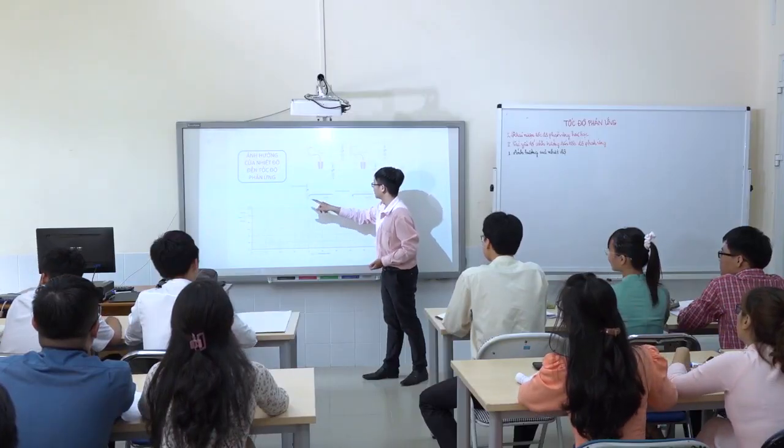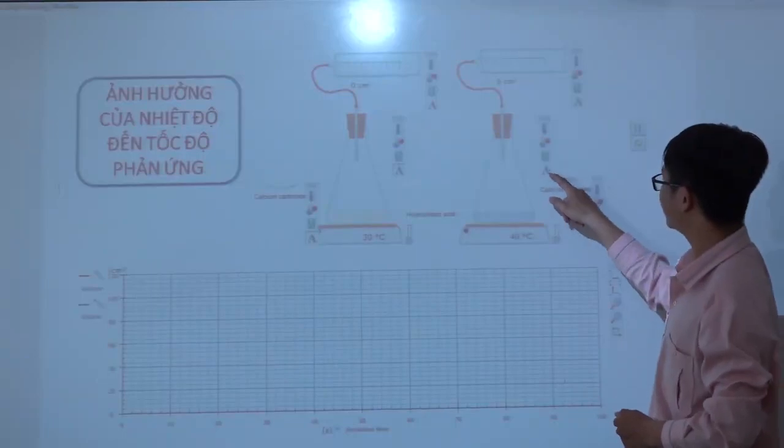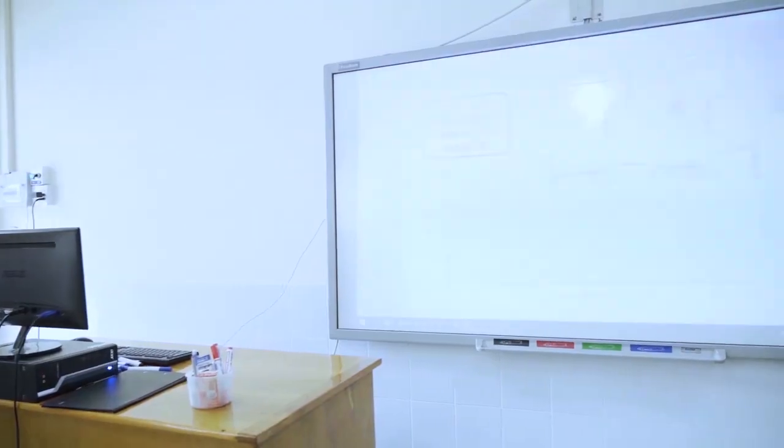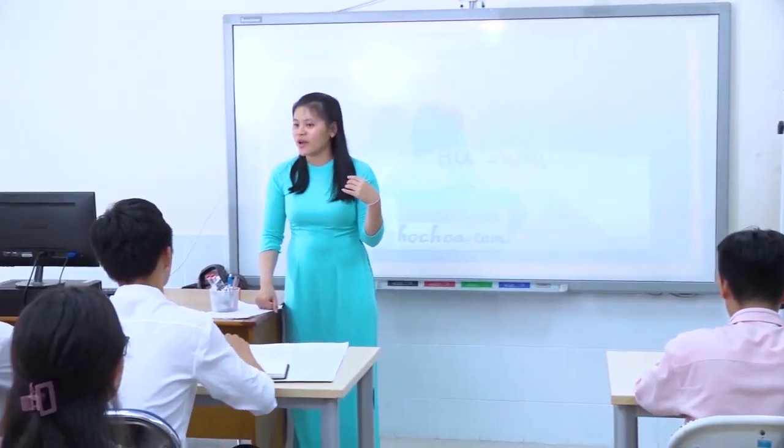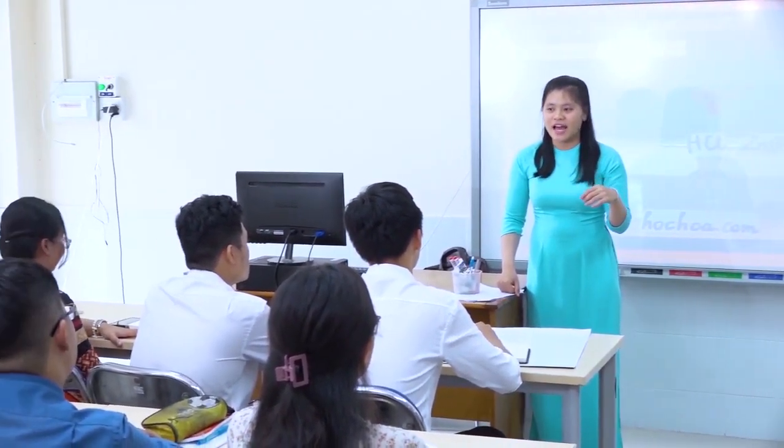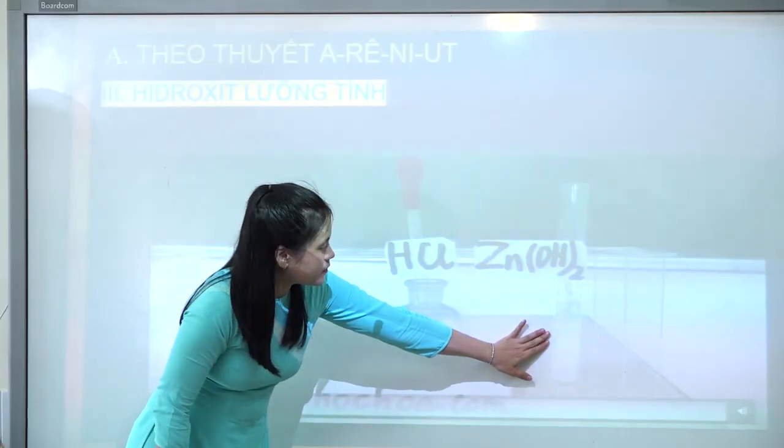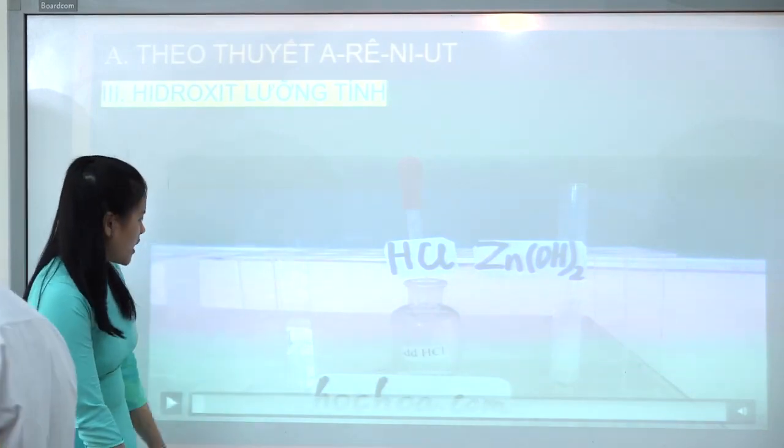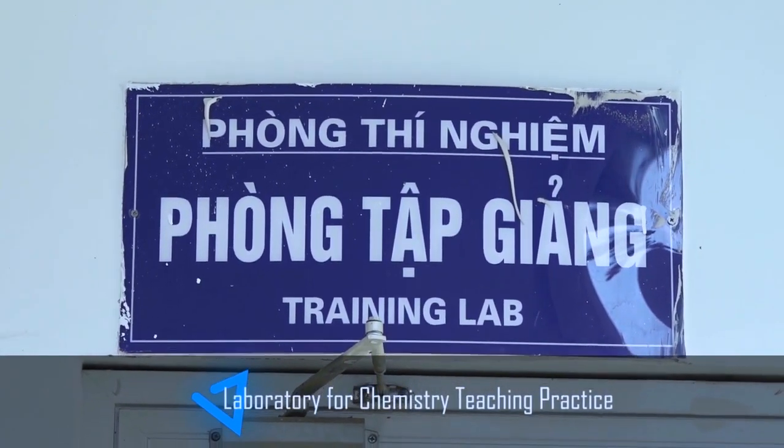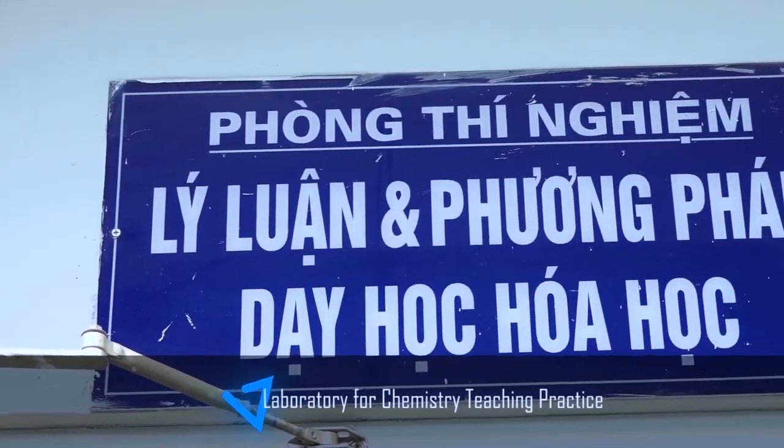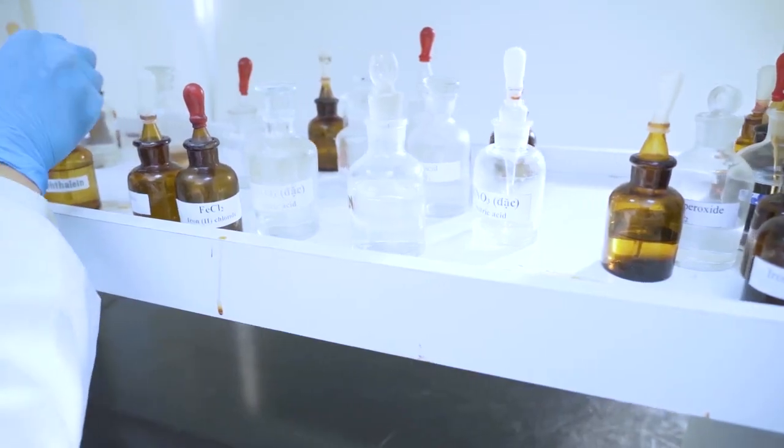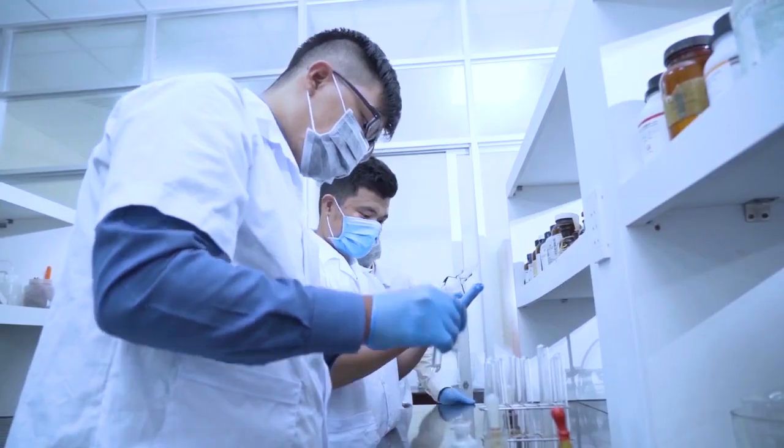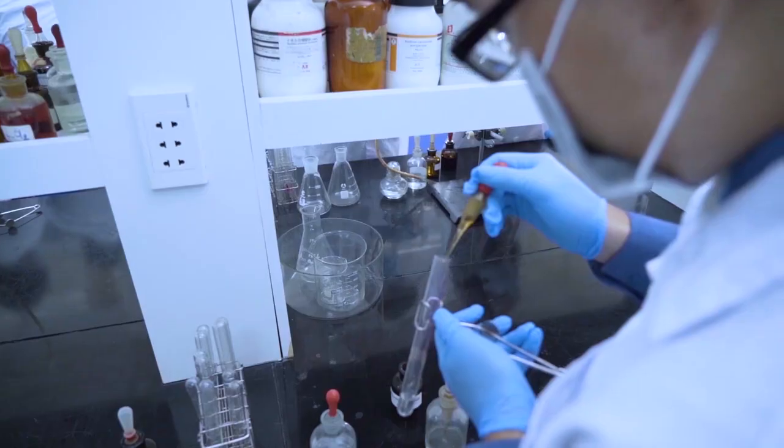The smartboard, also known as an interactive whiteboard, can be either a stand-alone touchscreen computer used independently to perform tasks and operations. This helps student teachers utilize various media types, integrate technology into teaching, and organize interactive learning activities for learners. The teaching practice room M002 is next to the laboratory for chemistry teaching practice M001. It is convenient for students to use chemicals and apparatus from the laboratory in their micro-teaching or teaching rehearsals.